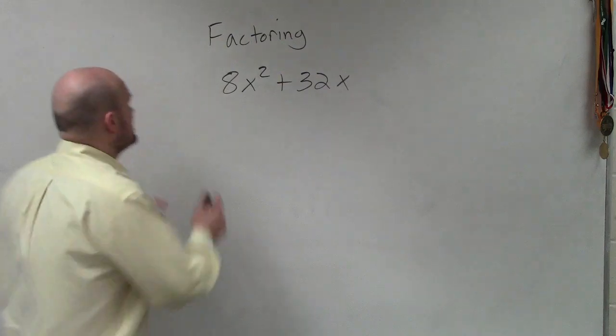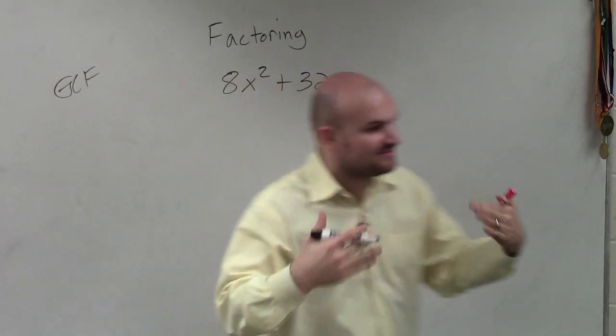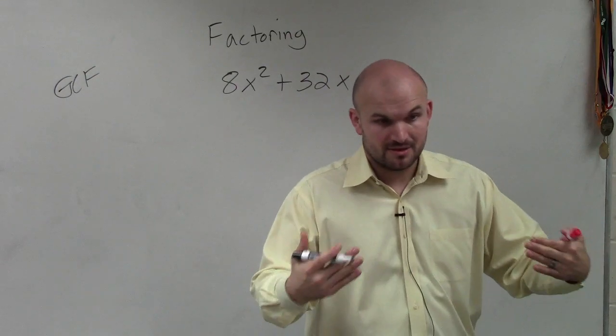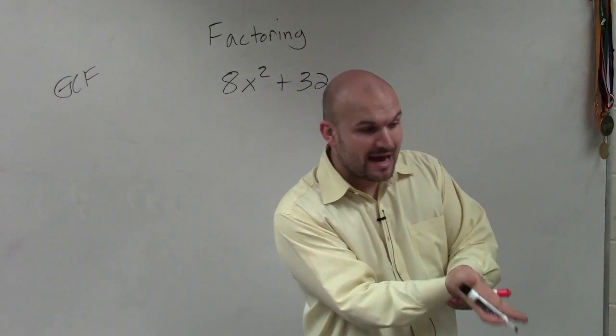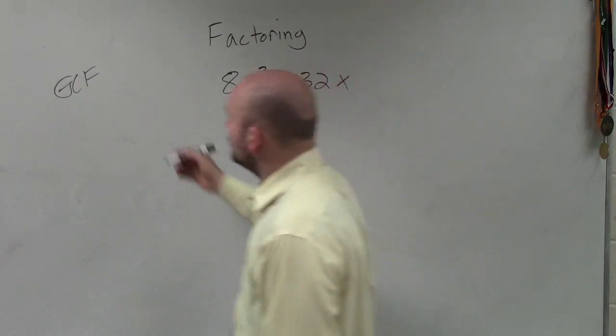So again, when I'm looking at the greatest common factor, I'm going to want to determine first, let's look at numbers. What is the largest number that divides into both of them? Eight. Four is not wrong. I mean, four does divide into both of them, but you always want to use the largest number, which is eight.